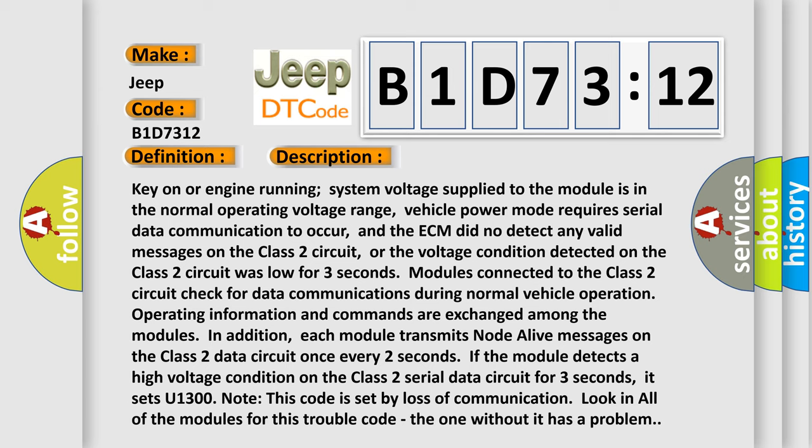Operating information and commands are exchanged among the modules. In addition, each module transmits node-alive messages on the Class 2 data circuit once every two seconds. If the module detects a high voltage condition on the Class 2 serial data circuit for three seconds, it sets U1300. Note this code is set by loss of communication. Look in all of the modules for this trouble code; the one without it has a problem.